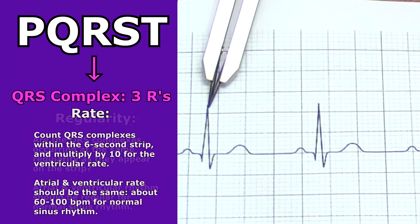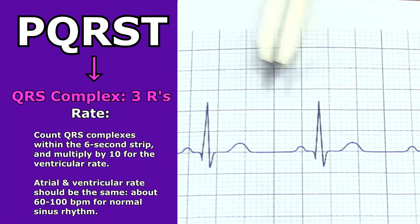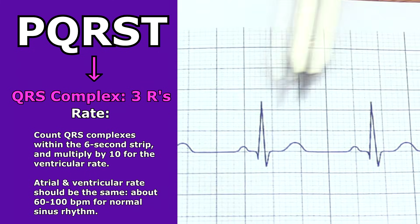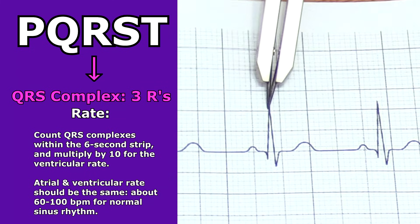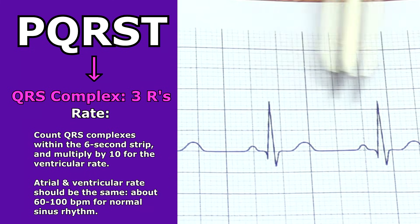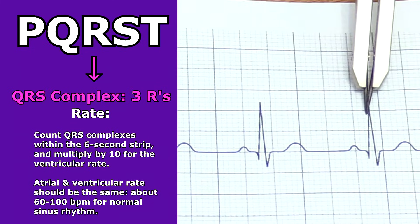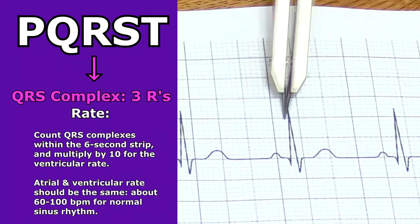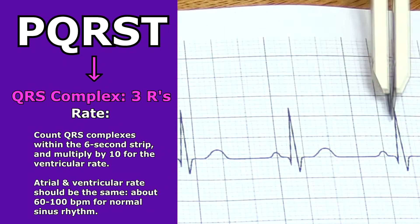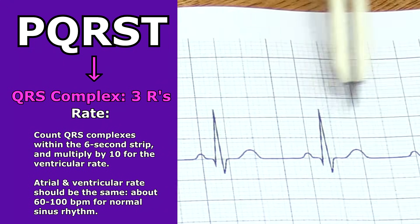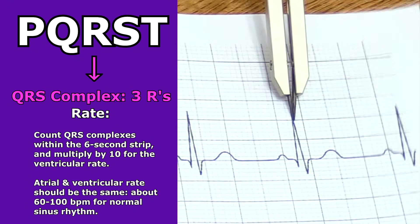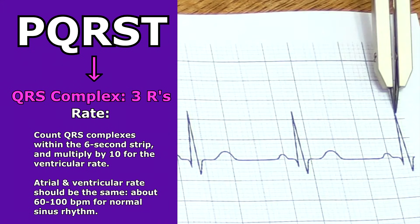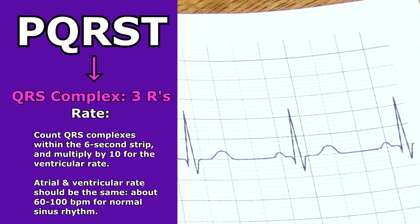Then look at the rate of the QRS complex within that six-second strip — count those complexes and multiply by 10. This is the ventricular rate. The atrial rate and the ventricular rate should be the same, around 60 to 100 beats per minute for normal sinus rhythm.